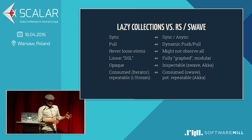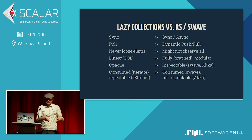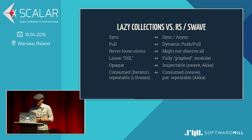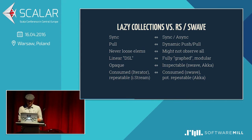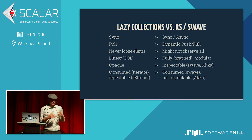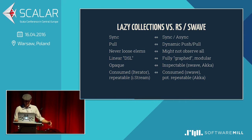Also, lazy streams are opaque — you can't inspect what the pipeline looks like — but for Swave you can, and that's cool. Iterators can be consumed, whereas immutable Stream is repeatable. In Swave, things are consumed as well, so you can only use them once, whereas in Akka they're potentially repeatable. We'll see later.